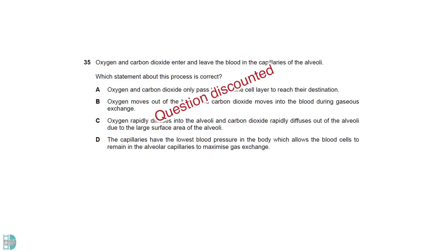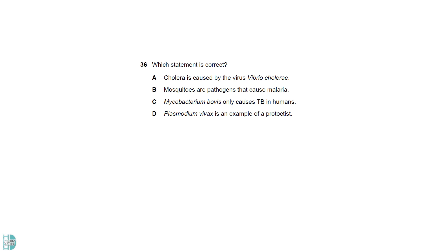This question is discounted. A is wrong because Vibrio cholerae is a bacterium not a virus. Mosquitoes are the vectors for malaria. Plasmodium is the pathogen that causes the disease. Mycobacterium bovis can cause TB in both animals and humans. D is the correct answer as the causative agent of malaria is a type of protoctist.